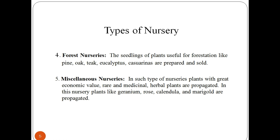In forest nurseries, the seedlings of plants useful for forestation like pine, oak, teak, and eucalyptus are prepared and sold. There is another type called miscellaneous nurseries, in which plants with great economic value and medicinal herbal plants are propagated. In this nursery, plants like rose, calendula, and marigold are prepared.